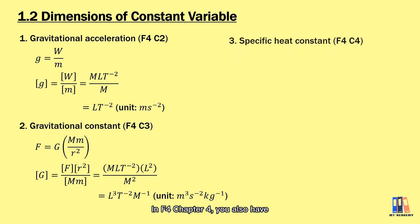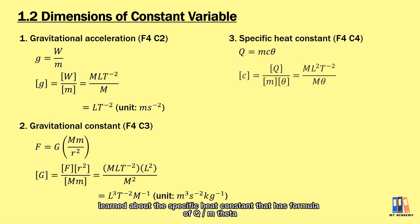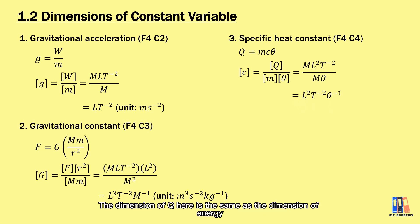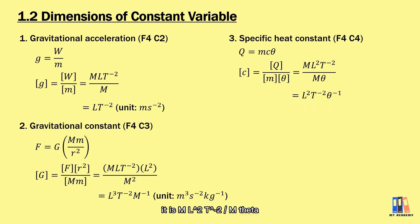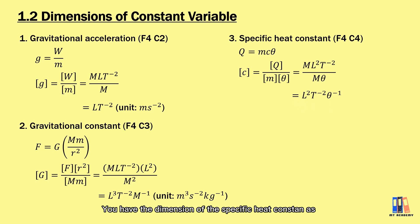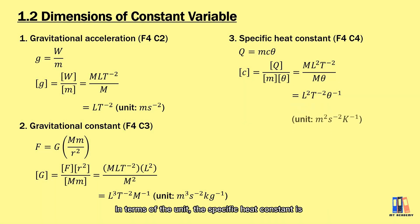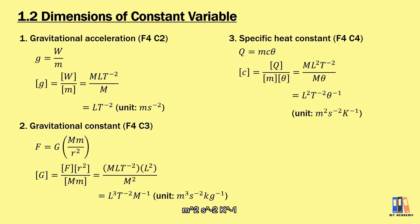In Form 4 Chapter 4, we learned about the specific heat constant with formula c = Q/(mθ). The dimension of Q is the same as energy: ML²/T². Dividing by M and θ gives the dimension of specific heat as L²/(T²·θ), with units of meter squared per second squared per kelvin.